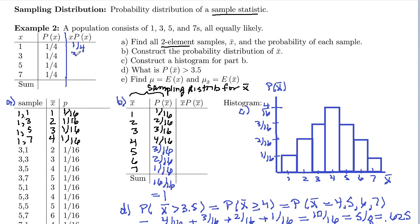3 times 1/4th, 3/4ths. 5 times 1/4th, 5/4ths. And 7 times 1/4th, 7/4ths. So let's see, that's 12, 13, 16/4ths, which is 4. So the mean of that original distribution is 4.